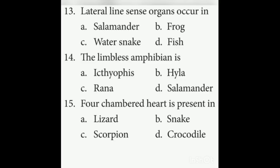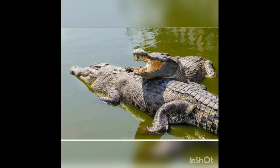Fifteenth question: A four-chambered heart is present in which of the following? Lizard, snake, and scorpion have three-chambered hearts, but crocodile — also a reptile — has a four-chambered heart with two auricles and two ventricles. The answer is crocodile.